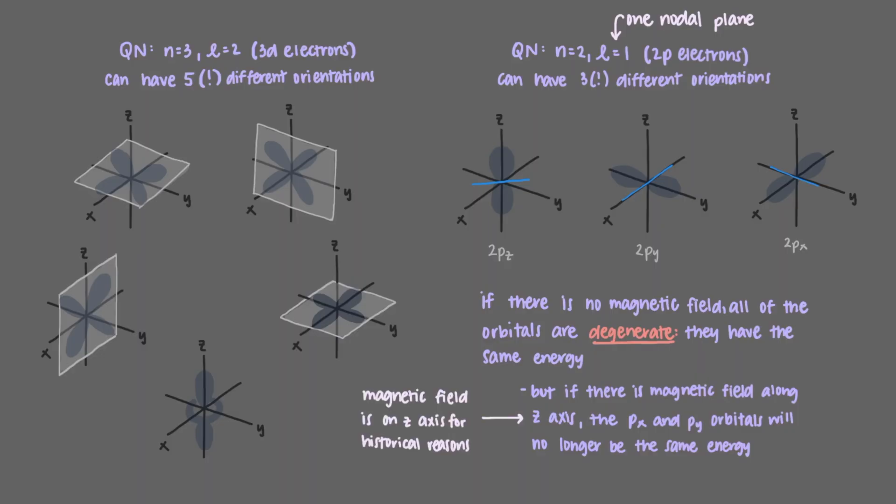For historical reasons, the magnetic field is always along the z-axis. Each orientation is represented by a new quantum number, the magnetic quantum number, which is denoted by m sub l.